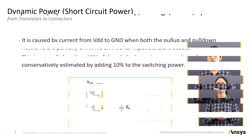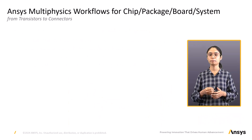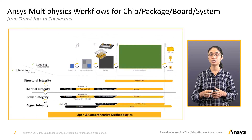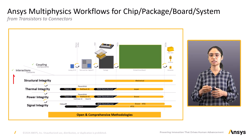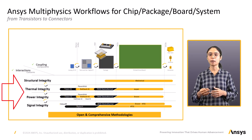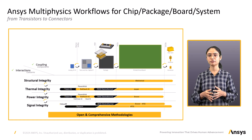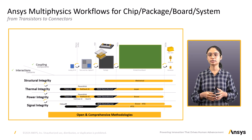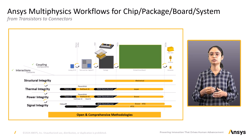ANSYS multi-physics workflows for chip, package, board, and system: ANSYS has a comprehensive power solution for the entire PDN from transistors to connectors. It has a variety of tools ranging from structural and thermal integrity to power and signal integrity. SIwave, HFSS, and RHC cater to the part of the PDN whose electrical dimensions approximate the wavelength of operation. RedHawk-SC and Power Artist are the on-die tools that optimize the workloads and the on-die PDN elements.